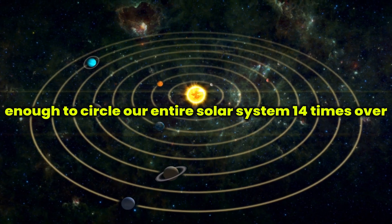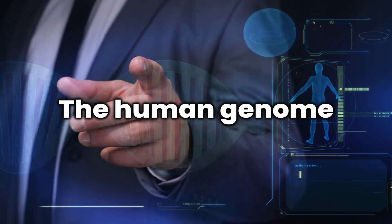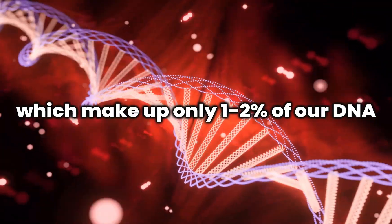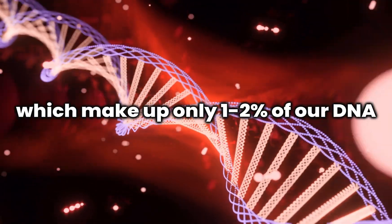The human genome comprises about 20,000 genes, which make up only 1 to 2% of our DNA.